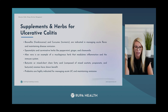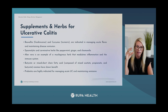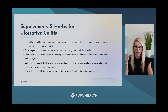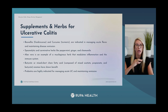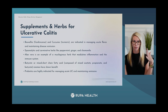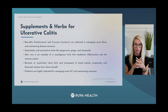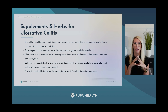Aloe vera is an excellent demulcent — it helps with inflammation and soothes the gut lining, aiding areas of ulceration. A study found aloe vera supplementation for four weeks was superior to placebo at inducing remission in mild to moderate UC. Other demulcents, often found in combination powder products, include slippery elm, marshmallow root, DGL, and aloe — all supportive for these patients.